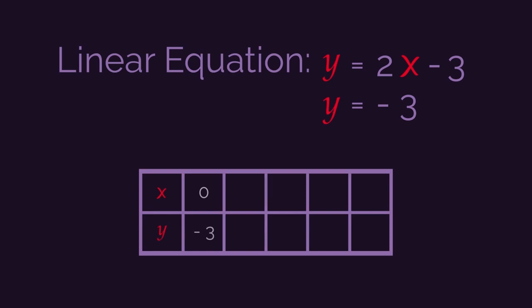So now choose another value of x. Keep the numbers small. So let's go for x equals 1. So then y equals 2 multiplied by 1 minus 3. So y equals 2 minus 3. So y is negative 1. And again, we can enter this into our table. When x is 1, y is negative 1.